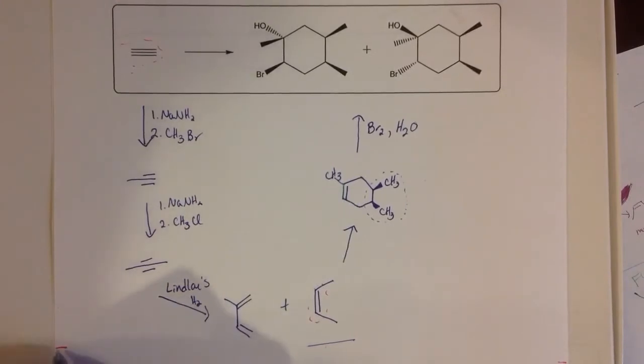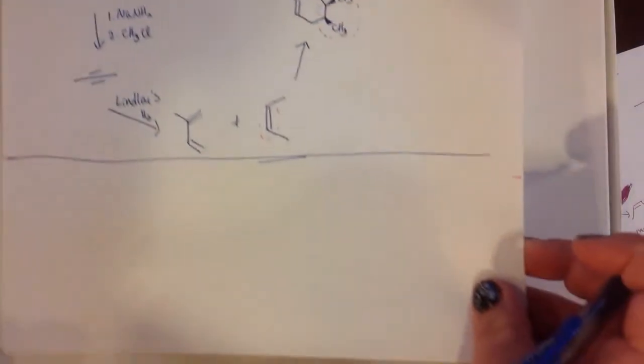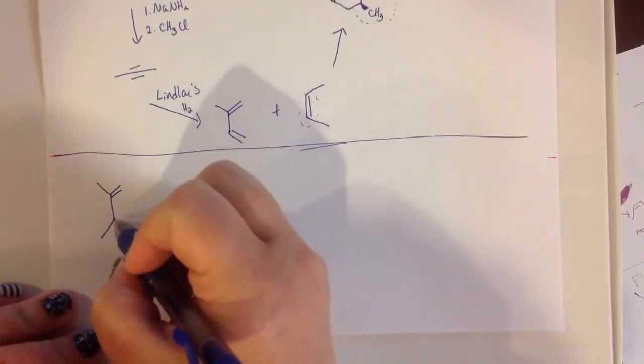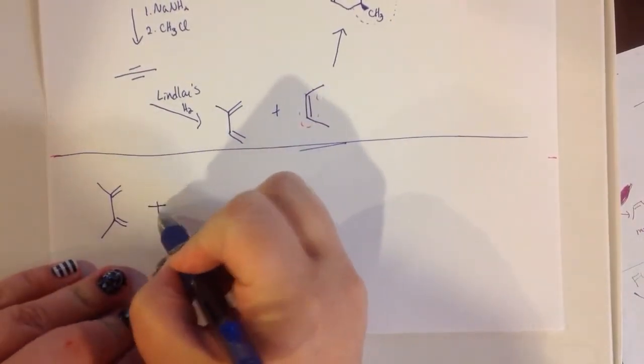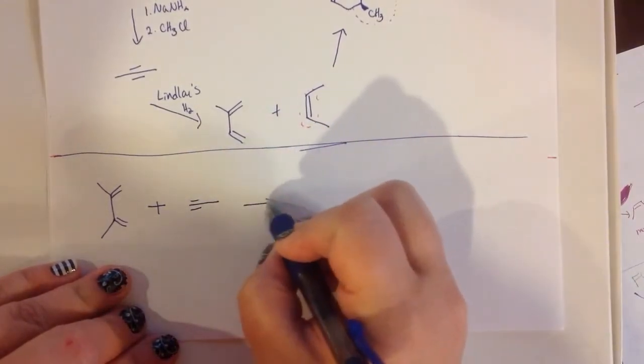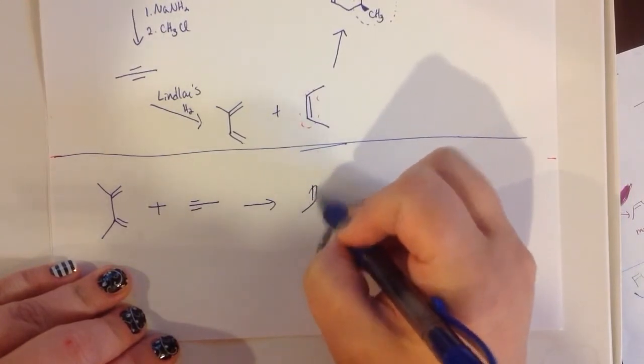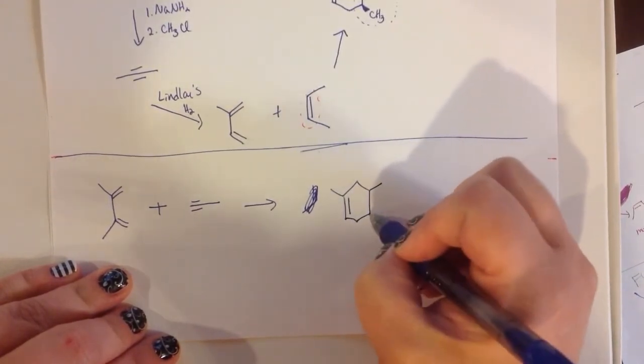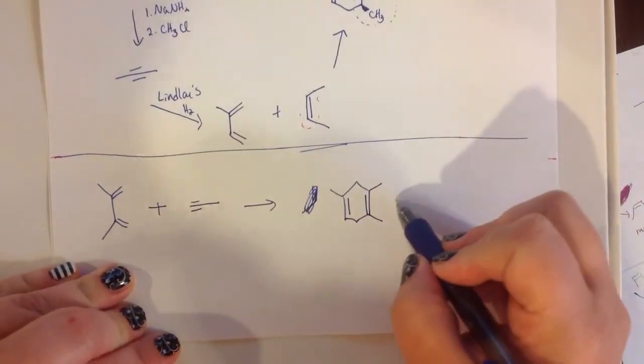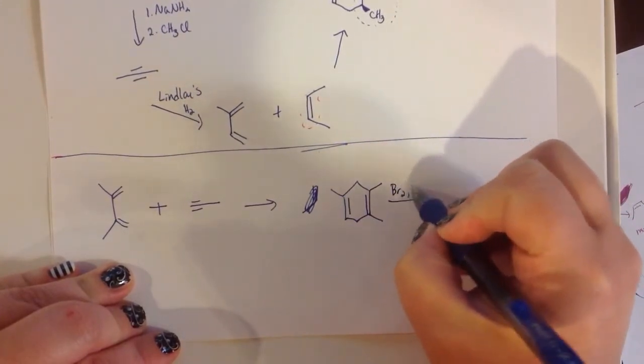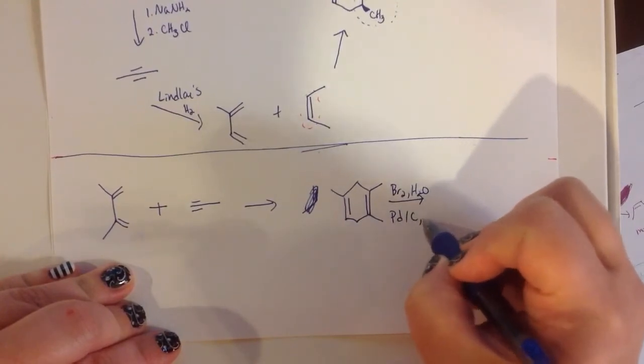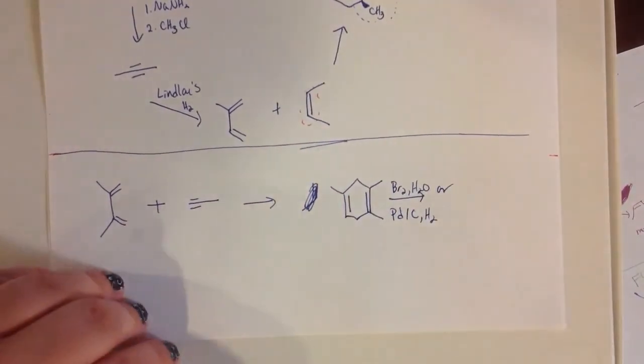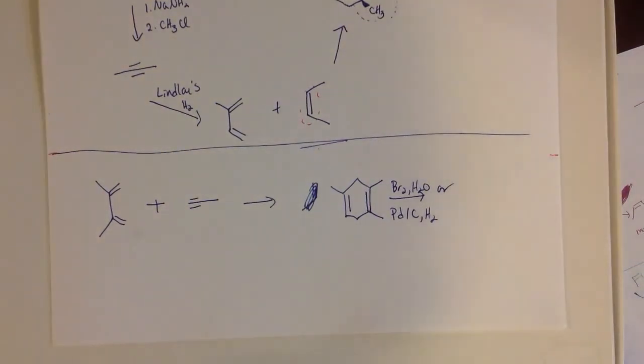So this is actually a completed problem at this point. I do want to point out one other thing. I've seen some people attempt this particular problem in a Diels-Alder going in this direction. That will give you a product that looks like this. Now, whether you add Br2 in water or palladium on carbon and H2, both of these reactants will react with both of these double bonds. That's why we actually cannot use that synthetic route to get to that product.